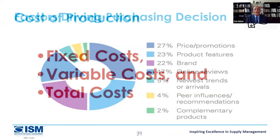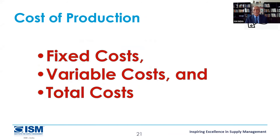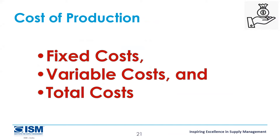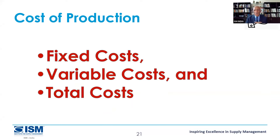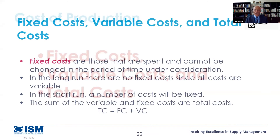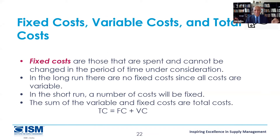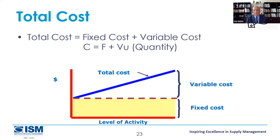The cost of production depends on capacity. One company may have capacity of 1 million pieces, another 2 million. The company with 2 million pieces will have a lower breakeven level. This brings in fixed cost and variable cost. Fixed cost is fixed — you set up a plant, you pay rent, electricity, bare minimum staff. When you start production, more material is required — that's variable cost. Variable cost goes in a straight line. Total cost is a combination of variable and fixed costs.